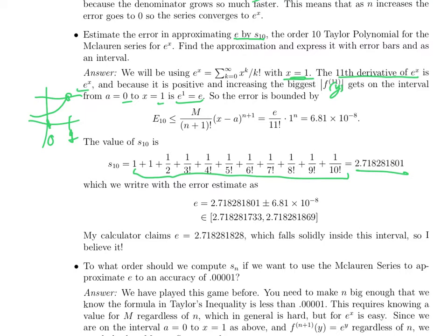So that is all to say that the error between e and this approximation is less than or equal to the usual Taylor's inequality. In our case, M is e, n is 10, so n+1 is 11. And x minus a is 1 minus 0. This should read 1 to the 11th. It doesn't matter. It's just 1. And you type that into your calculator. You find that the error is bounded by 6.81 times 10 to the negative 8.